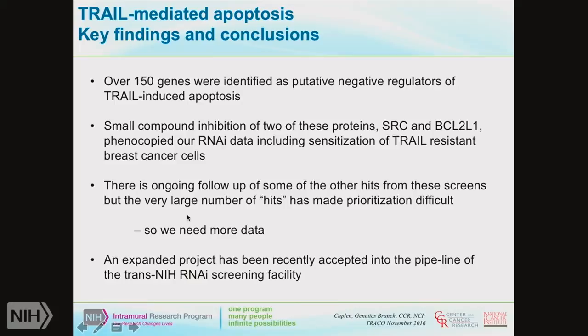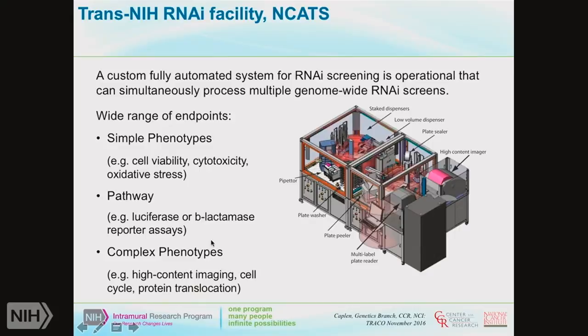One of the problems was that it was hard to understand the mechanistic basis for many of the hits. With only 1,000 genes, it was not enough to make sense of an entire pathway, so this project has been expanded and accepted into the pipeline of the trans-NIH RNAi screening facility. This facility spun out of my lab over six years ago. It is a fully automated RNAi screening system. We're also now starting to put CRISPR into the pipeline — not as full screens yet, but for validation downstream of the RNAi screens, with the aim of adapting our workflow for CRISPR screening.